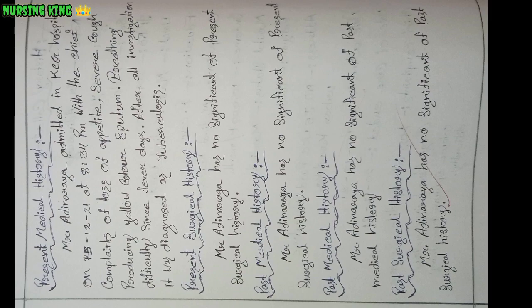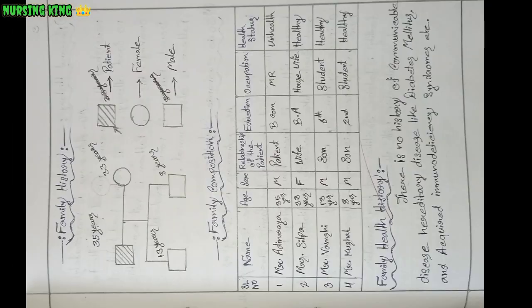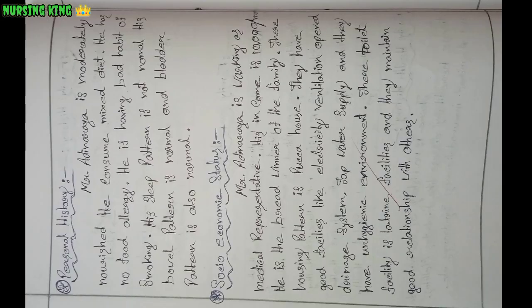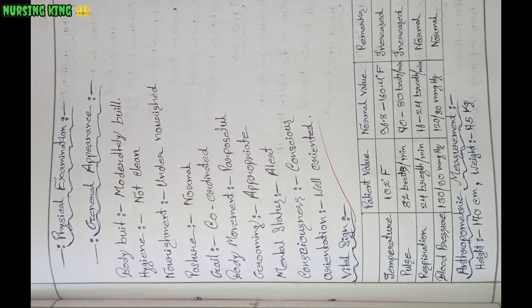In the history section, write the past medical history, past surgical history, then family history and family composition, then personal history, and socioeconomic history regarding that patient. All of these sections need to be written, then move on to the physical examination.